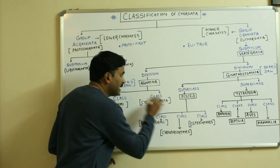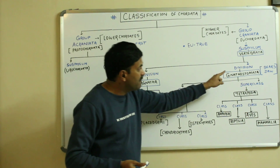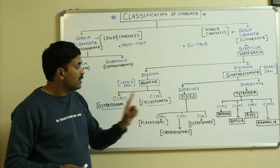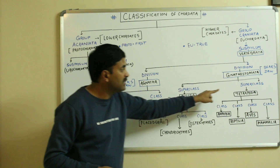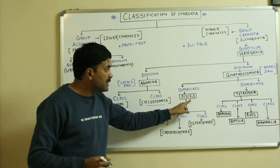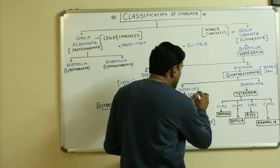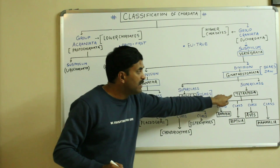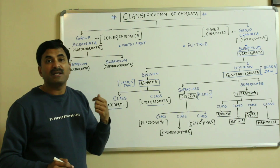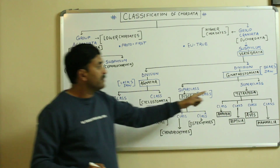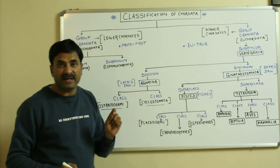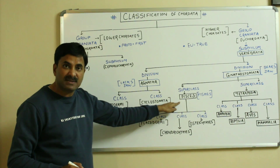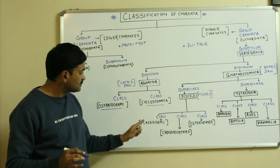The division Agnatha is classified into two classes: one is known as Ostracodermi and another is known as Cyclostomata. The division Gnathostomata is divided into two superclasses: one is known as Pisces and another is known as Tetrapoda. In Pisces, all the fishes are included. Tetrapoda means they have four appendages — tetra means four, poda means legs — so they are four-legged organisms.